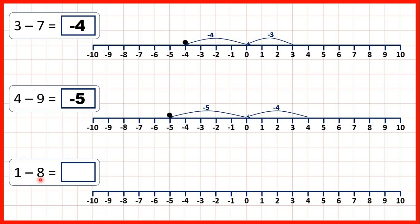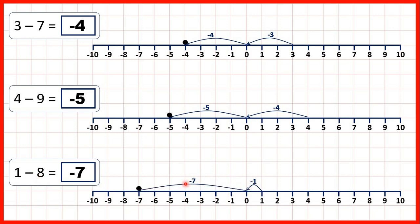Now we have one minus eight. So we can start at one and count back one, two, three, four, five, six, seven, eight. So we get to minus seven. Or we could have just counted back one to get to zero. But then, so that we've counted back eight altogether, we could have made another jump of seven. Because if we subtract one and then subtract seven, we've subtracted eight altogether.